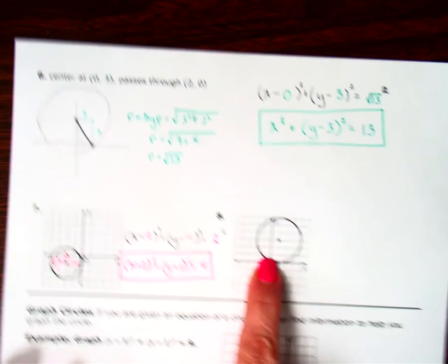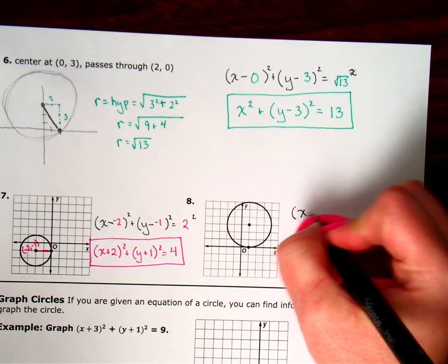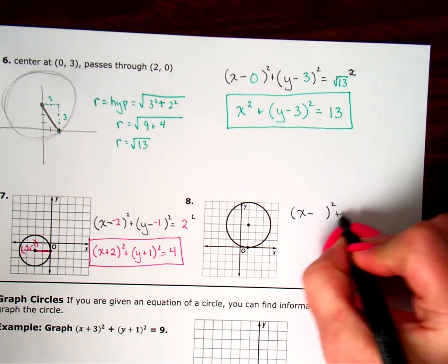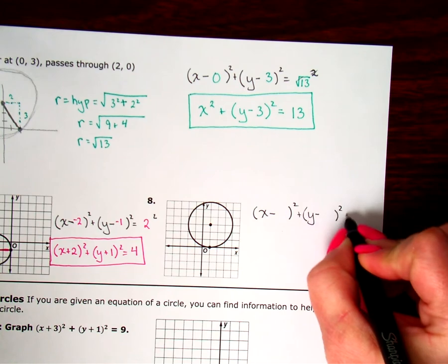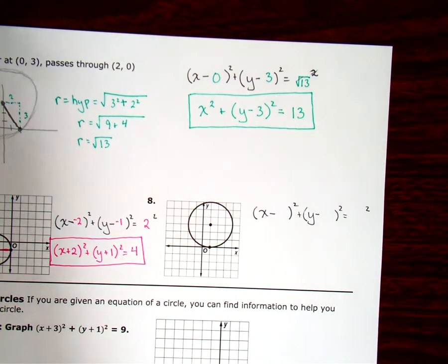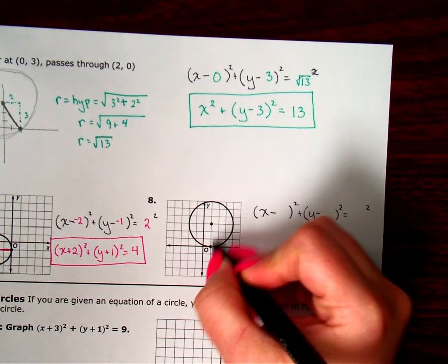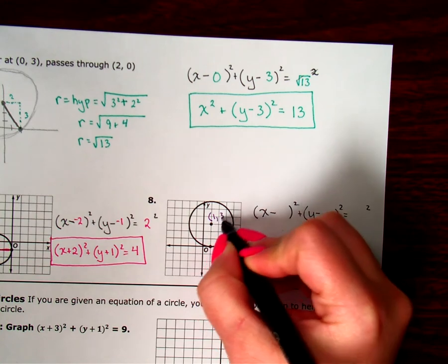Here's another one where we've been given the graph. I'm going to start by doing the same thing I did before. X minus the X from the center plus Y minus the Y from the center squared equals my radius squared. Now I'm going to look at my figure and say where is this center? It is at 1 and then 1, 2, 3. So the X is 1, the Y is 3.